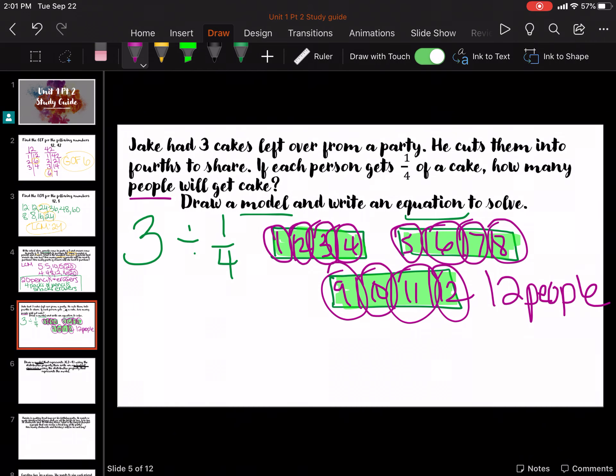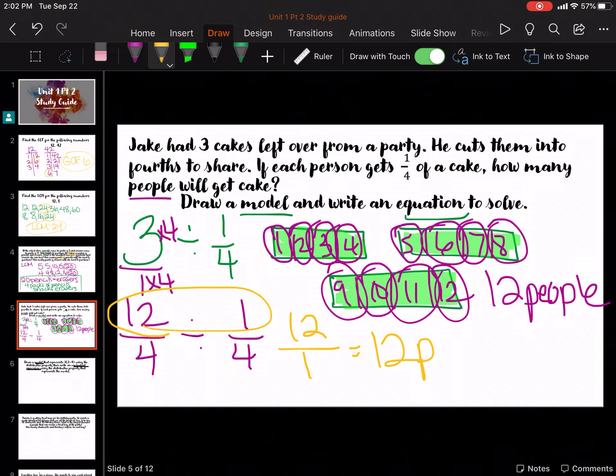And let's check the algorithm to double check. So our common denominator is going to be 4. So times 4, times 4. 3 times 4 is 12. Divide the numerators. And that's 12 over 1, which is 12 people. Okay, make sure answers get the same.